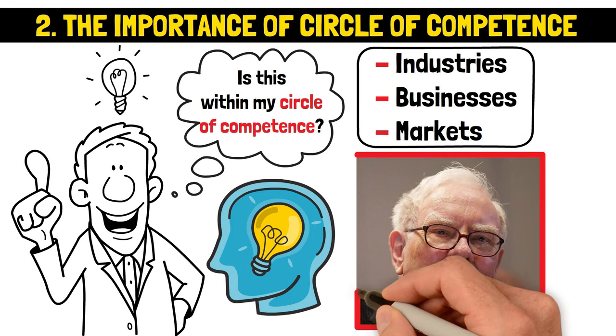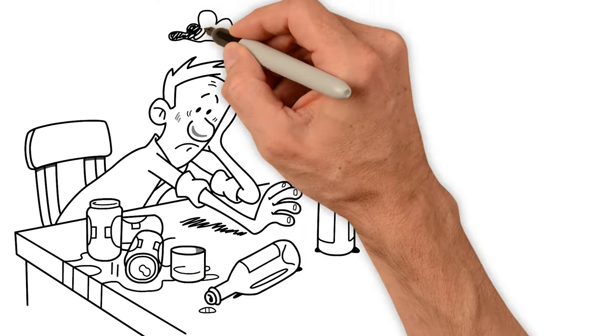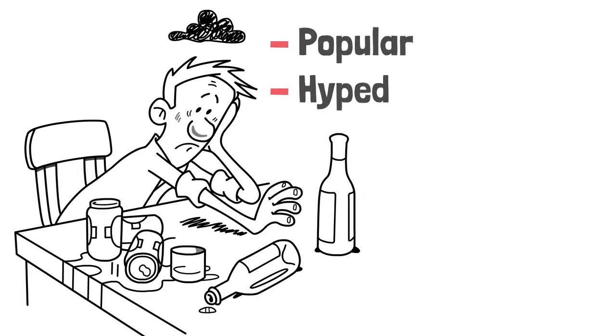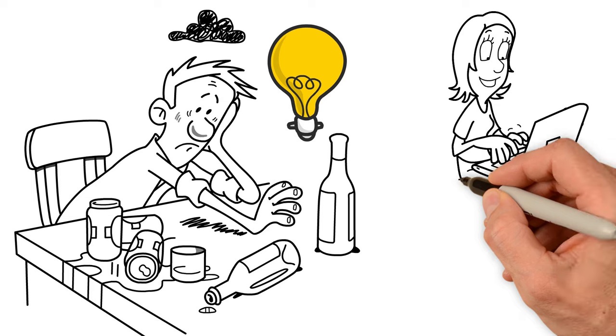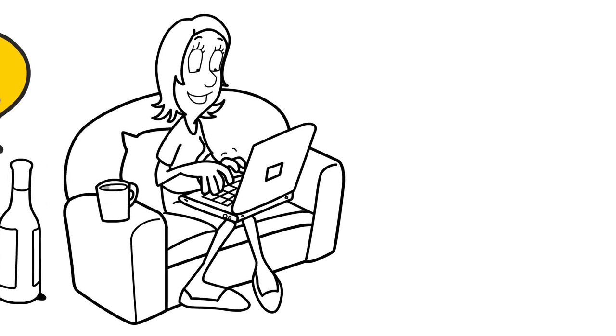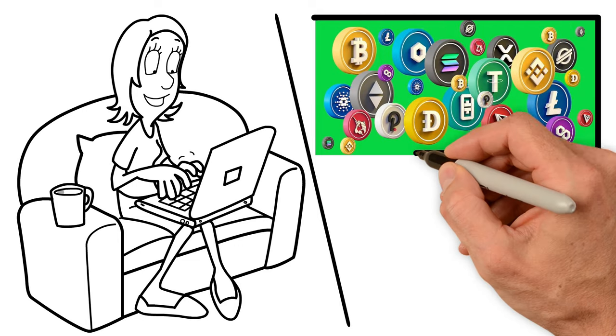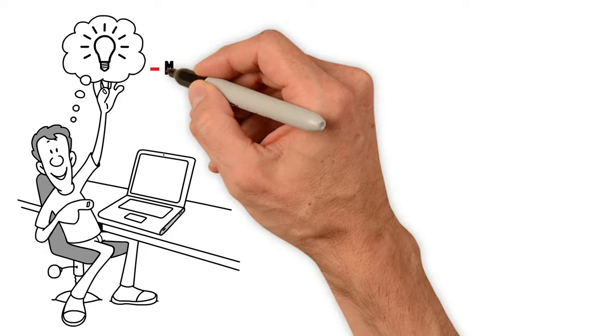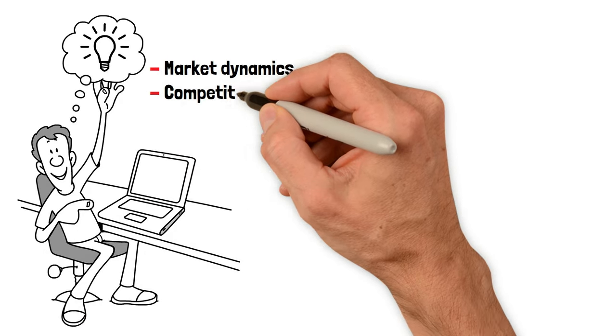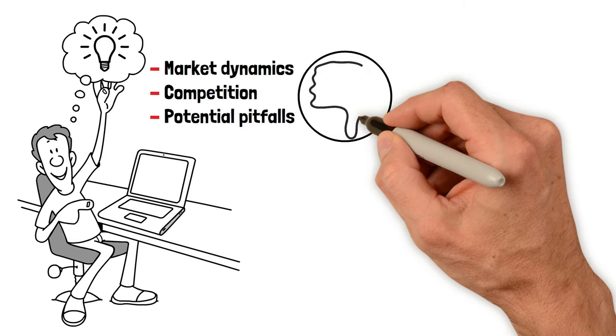It's one of the core principles of investing adopted by investing legends like Warren Buffett. So what does this mean for you? It means you shouldn't feel pressured to invest in something just because it's popular or hyped. Stick to what you know. If you're into tech and understand the ins and outs of that industry, focus your investments there. If you're more comfortable with cryptocurrency, then that's your playground. Investing outside of your circle of competence can be risky. You might not fully grasp the market dynamics, the competition, or the potential pitfalls.